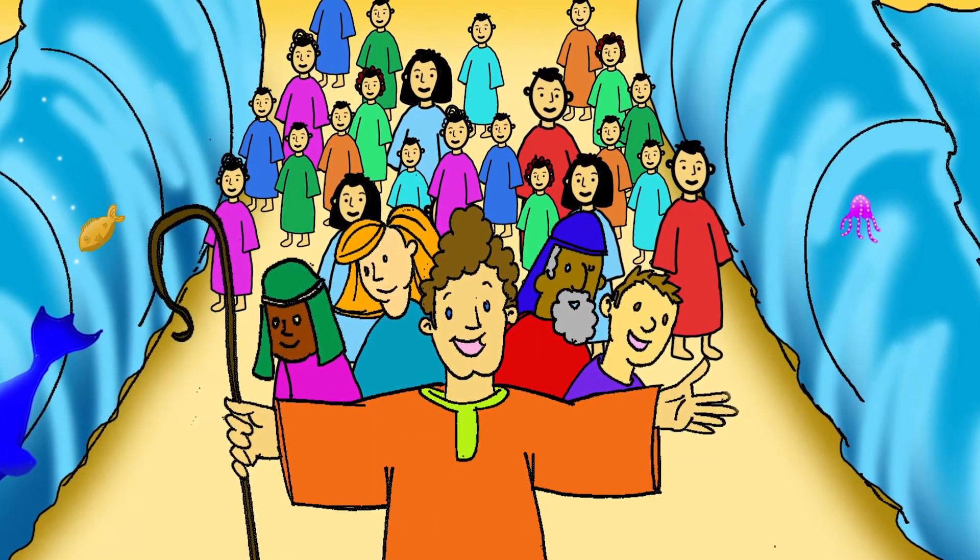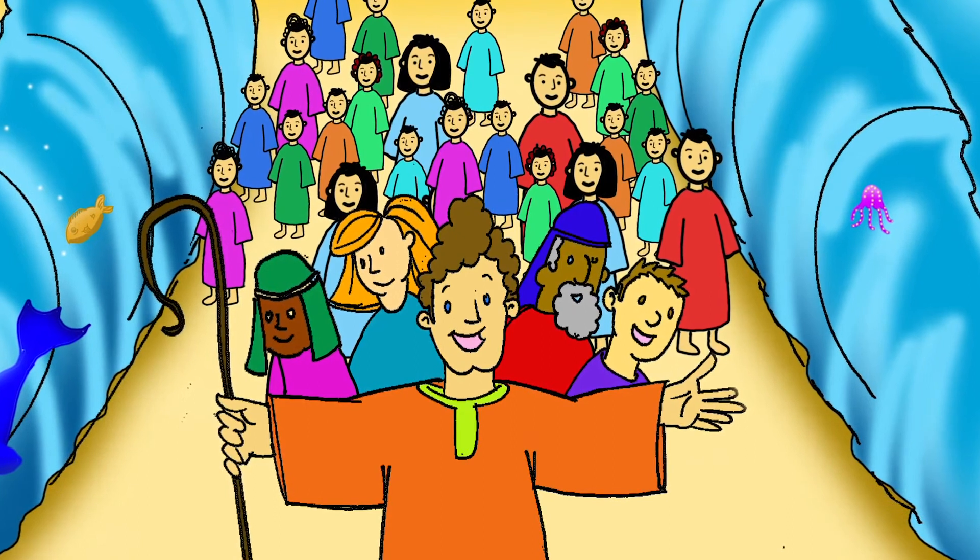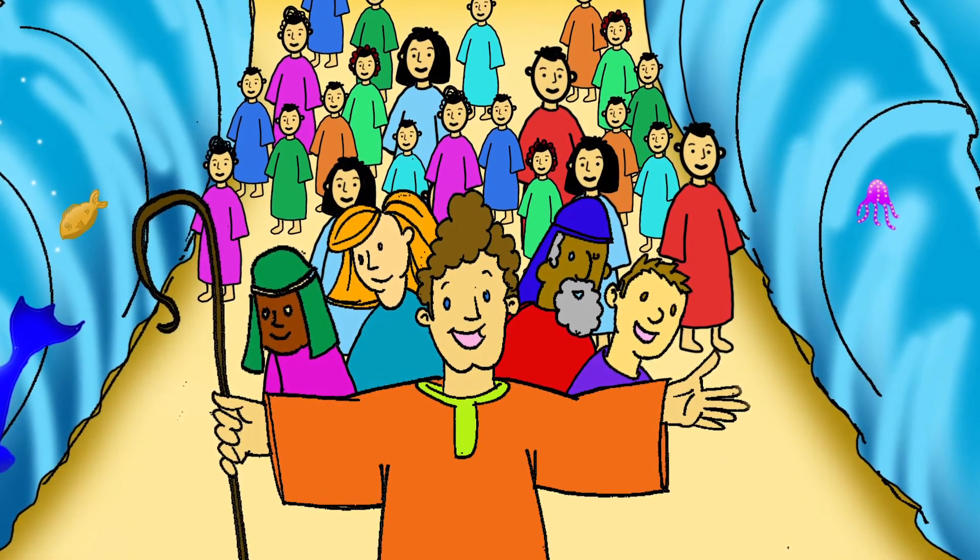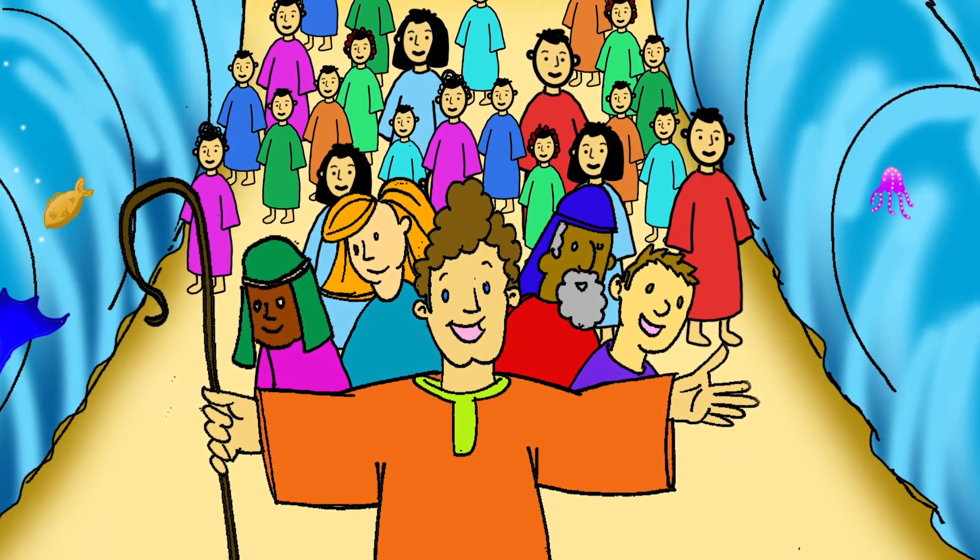God sent the pillar of cloud for Moses and the Israelites to follow once again. God was with his people, showing them the way to go. And they were following him.